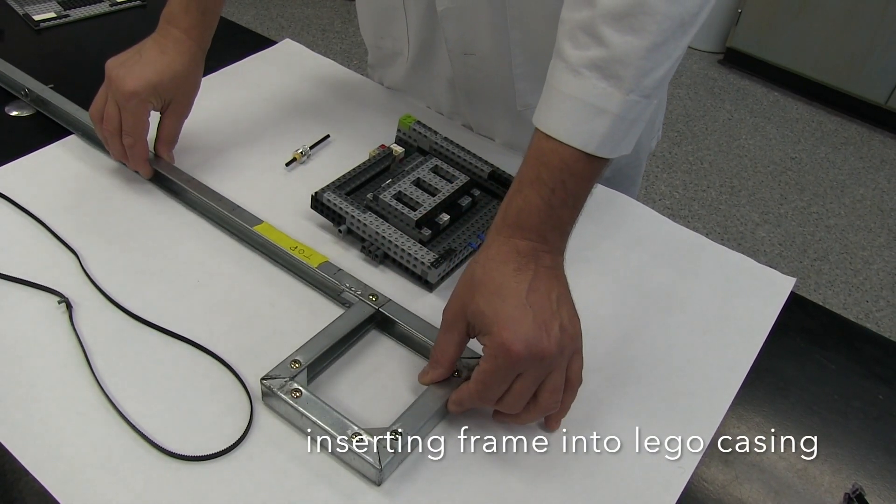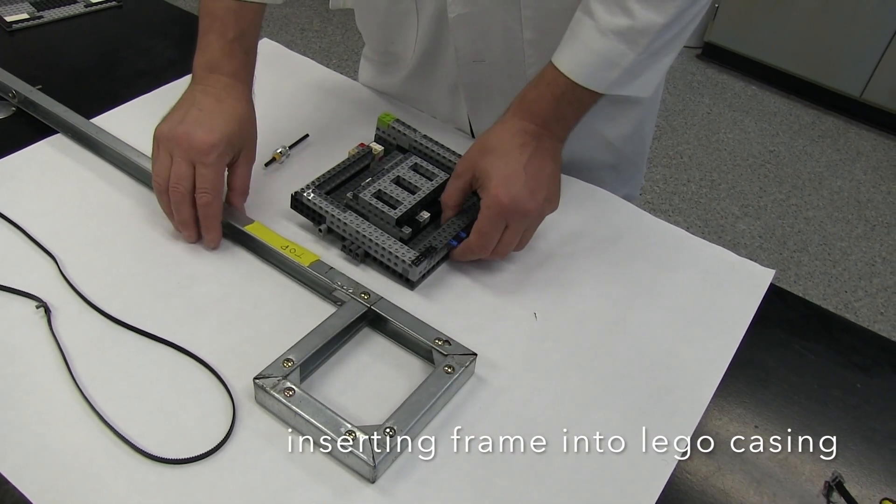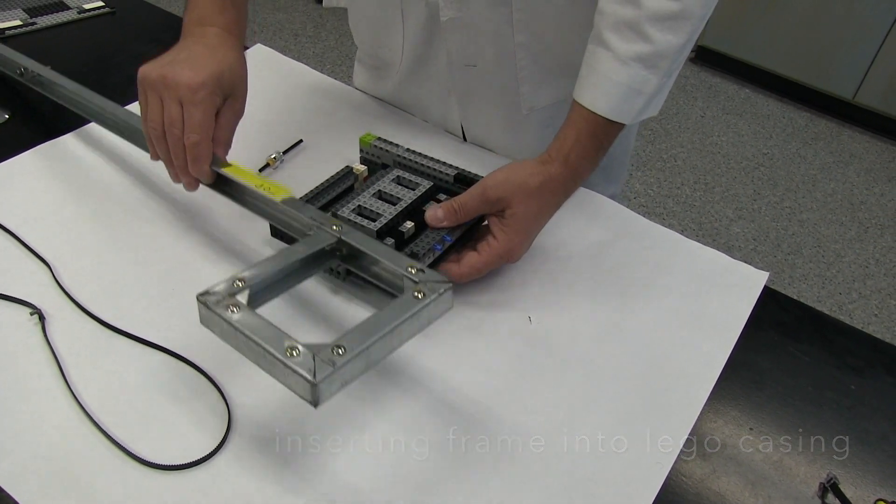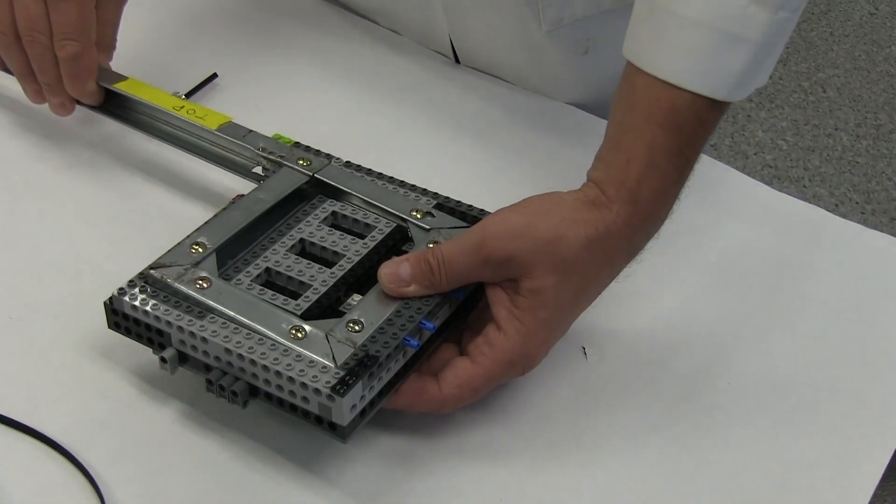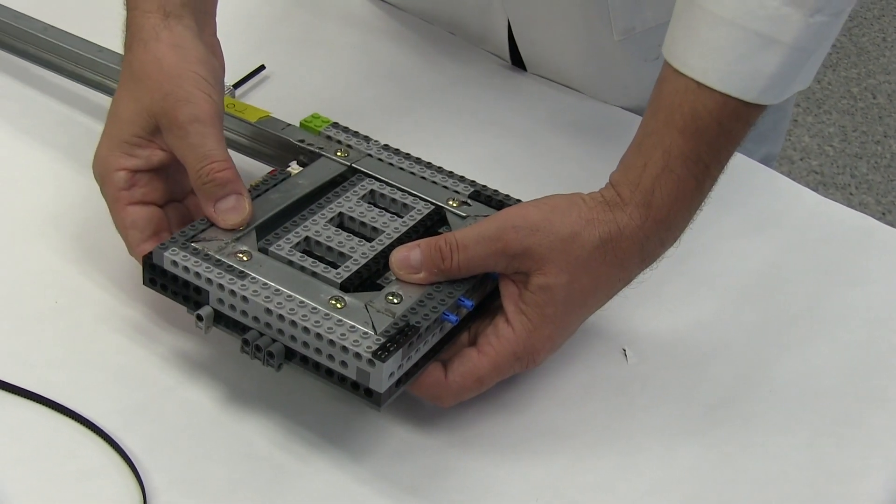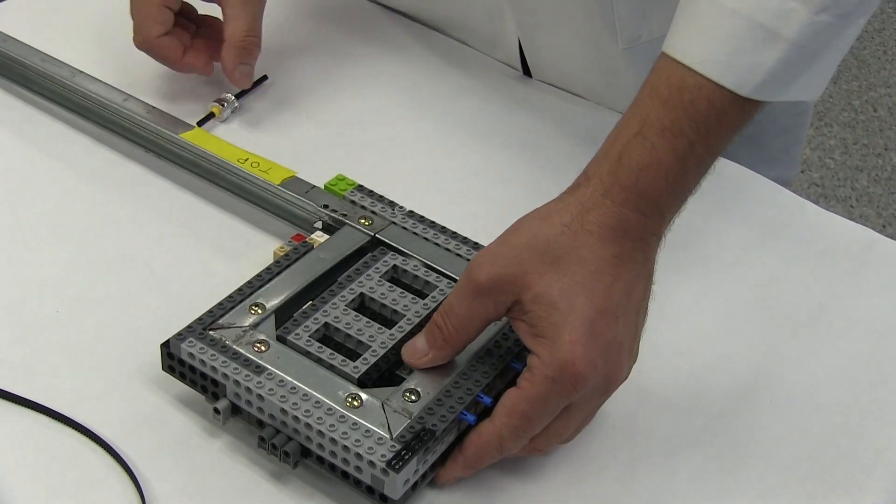In this next step, we will insert the metal frame into the Lego casing. Step by step instructions on how to create the Lego casing setup are provided as a supplementary file to the companion publication for this robotic system.